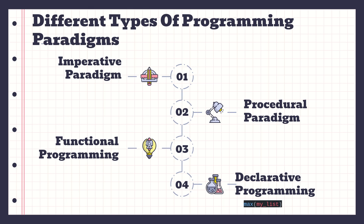The second paradigm is procedural programming. Procedural programming takes imperative programming to a newer level - we take imperative programming and break it down into subroutines. We take those instructions and break them down into sub-parts called sub-processes, subroutines, or procedures - that's why it's called procedural. You break the instructions down into subroutines that are called when needed. When we use a collection of functions within your program, it's called procedural programming - you're breaking down your code into functions and calling these blocks at specific points.